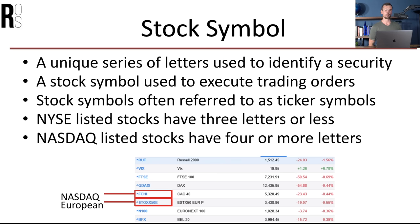Now let's talk a little bit more about the idea of a bull market. During a bull market, share prices are rising and most investors are buying. Bullish investors make money from rising stock prices, similar to the way that a bull attacks — that's why it's referred to as a bull market. You see bull markets during strong economic times because companies' profits are typically rising, unemployment is falling, and hopefully wages are rising as well.